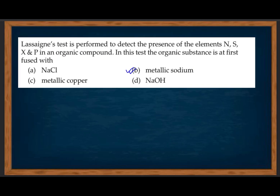Lassaigne's test is performed to detect the presence of elements — nitrogen, sulfur, halogen, and phosphorus — in an organic compound. In this test, the organic substance is first fused with metallic sodium.